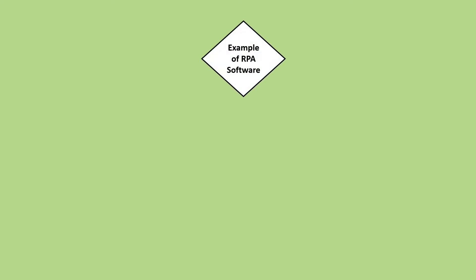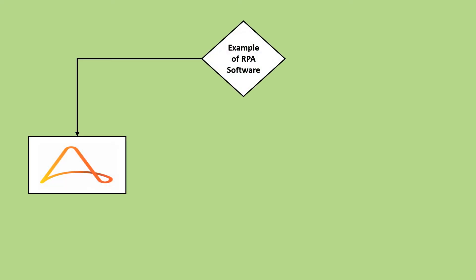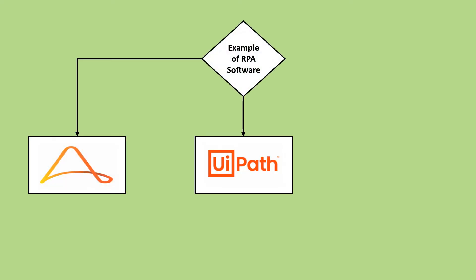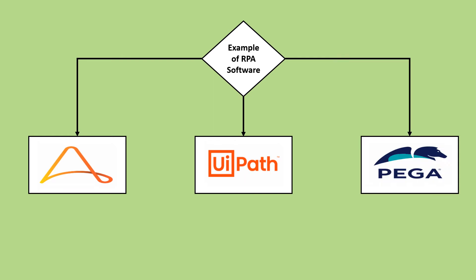Here are some examples of RPA software. Some of them are Automation Anywhere, UiPath, and Pega Platform.